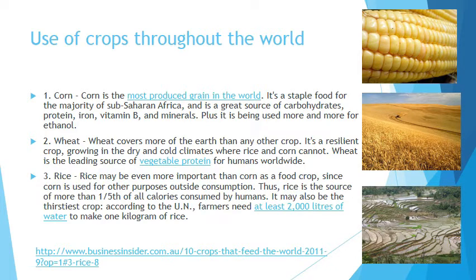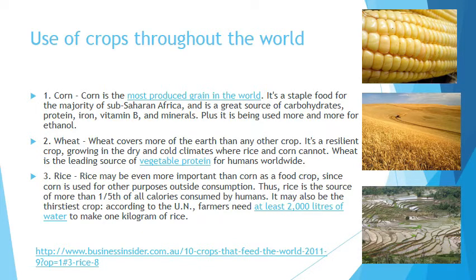The three top grains grown in the world are corn, wheat and rice. Corn is the most produced grain and is a staple food for much of Africa and South America — a good source of carbohydrates, protein and minerals — but more and more corn is being used to produce fuel. Wheat covers more of the earth than any other crop and is used as a protein source for humans worldwide. We don't really think about wheat containing protein, but remember gluten is a protein — some people use it as their main protein source rather than meat, fish, dairy and eggs.